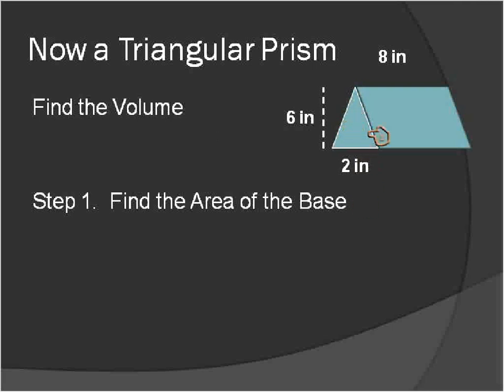So let's start out by finding the area of the base. The area of this triangle is going to be half of the base times the height. That's the formula for the area of a triangle.